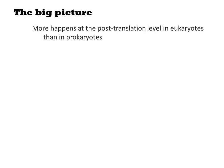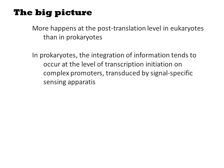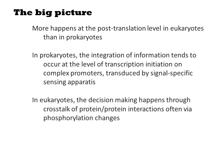In the big picture, more happens at the post-translational level in eukaryotes than in prokaryotes. In prokaryotes, the integration of information tends to occur at the level of transcription initiation on complex promoters, transduced by signaling-specific sensory proteins and transcription factors. In eukaryotes, the decision making happens through crosstalk of protein-protein interactions, often via phosphorylation changes.